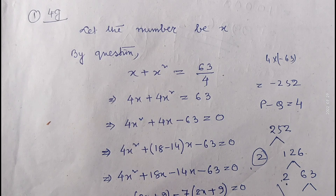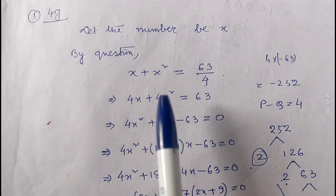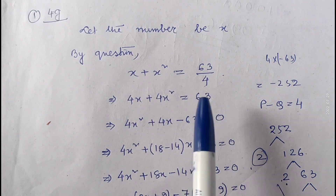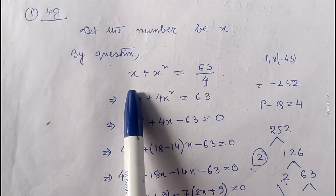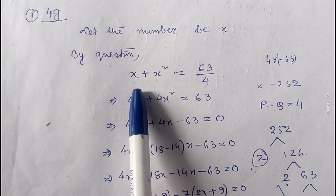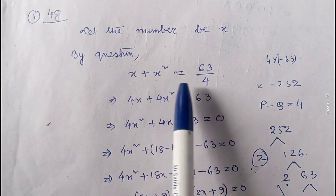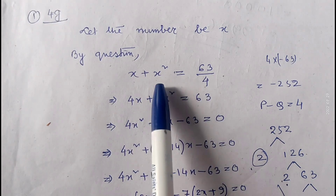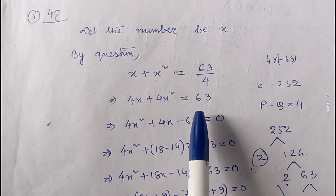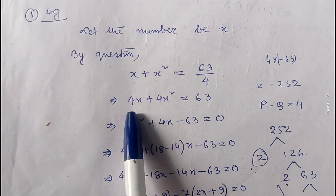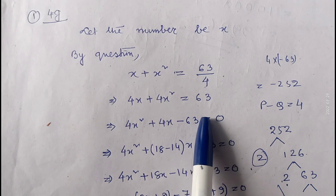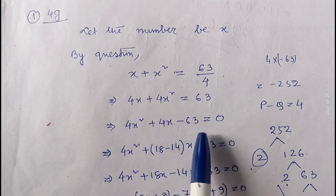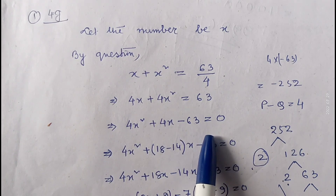As given in the question, the sum of a number and its square is 63 by 4. Let the number be x, so x plus x square equals 63 by 4. If we cross multiply: 4x plus 4x square equals 63. Rearranging, we get 4x square plus 4x minus 63 equals zero. So we have one quadratic equation.